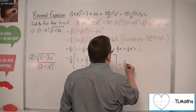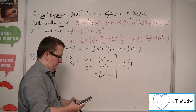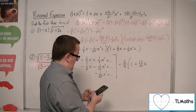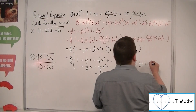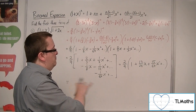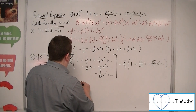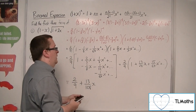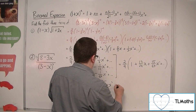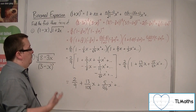Collecting terms: we have two-ninths times 1, then two-thirds minus one-eighth is thirteen twenty-fourths x, then one-third minus one-twelfth minus one-sixty-fourth gives fifteen sixty-fourths x², plus other terms. Multiplying through by two-ninths: we get two-ninths, plus thirteen over 108 x, plus five over 96 x², plus other terms. And those are the first three terms of the binomial expansion.